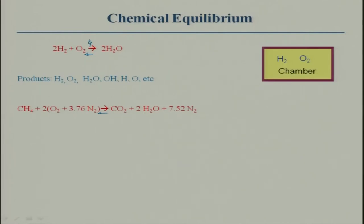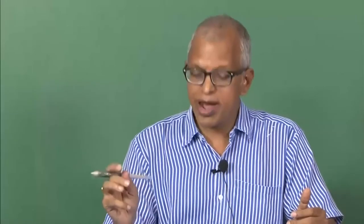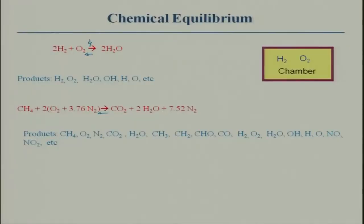Apart from the stable species like carbon dioxide, water, and nitrogen, there will also be other species present. What are those? If you look at it, there will be CO, hydrogen, CH₃, CH₂, CHO, CO, oxygen, OH, H, O, NO, NO₂, and several other species which I have not listed. Keep in mind that at equilibrium we need to find out the mole fractions or mass fractions of these species. For a methane-air system, I have only listed a few — there may be more — it is very difficult.